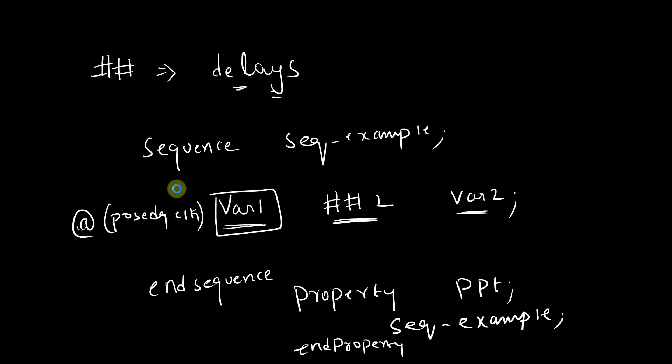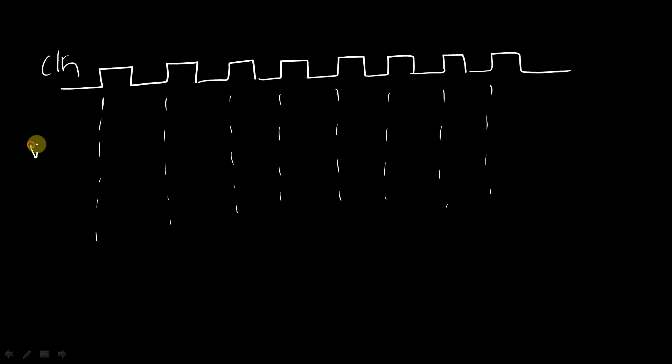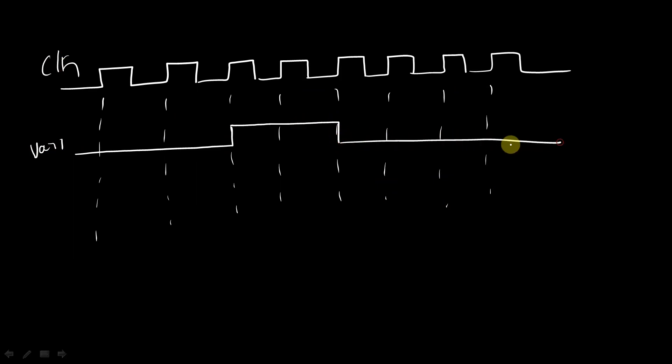Let us try to understand this particular thing with the help of waveforms. So this is your clock signal, and at positive edges of the clock, this particular assertion checking is happening. So these are your positive edges of the clock. Now, this is your variable one — let's say variable one is becoming high somewhere here. And let's say this is variable two — it is becoming high here.